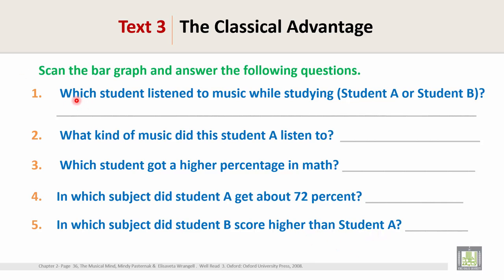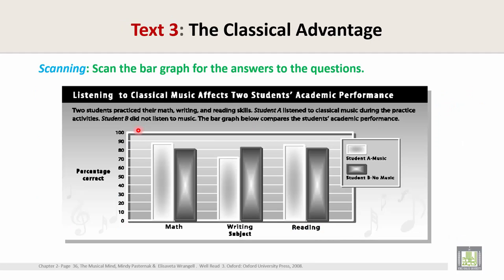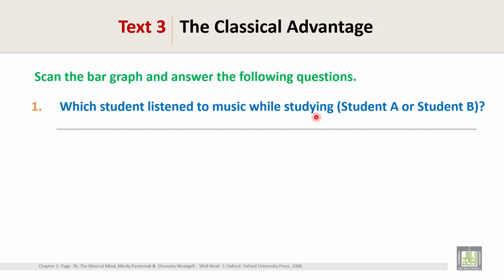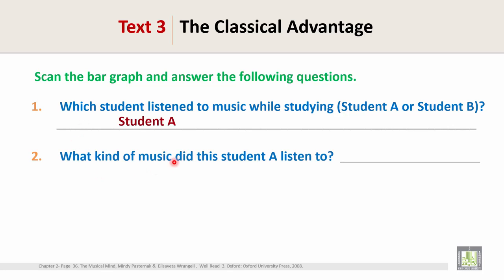We will begin from Question 1: Which student listened to music while studying — Student A or Student B? To answer this question, read the information given in the bar graph. Two students practiced their math, writing, and reading skills. Student A listened to classical music. So the answer is Student A.